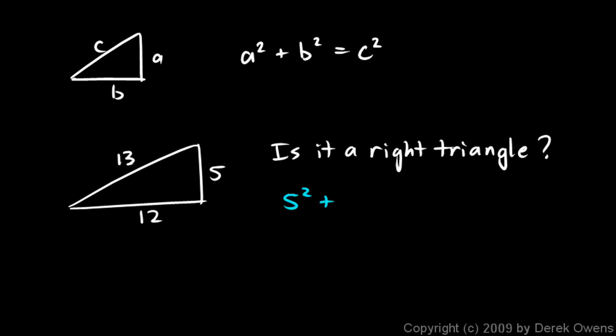So I'm going to write 5 squared plus 12 squared. And I'm going to say, is that equal to 13 squared? Well, 5 squared is 25. 12 squared is 144. And the question is, does that add up to 13 squared? And 13 squared is 169. And over here on the left, the 25 plus 144 does in fact add up to 169. So we know that this is a right triangle.